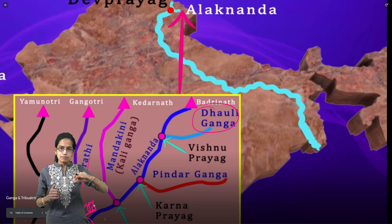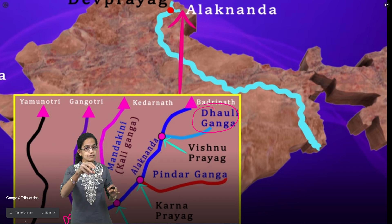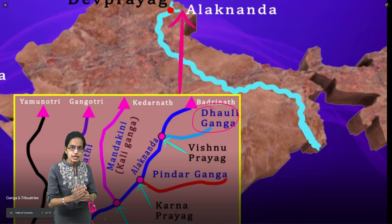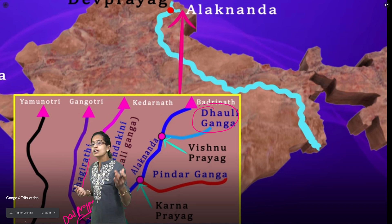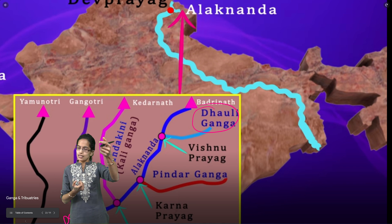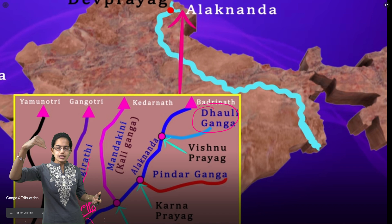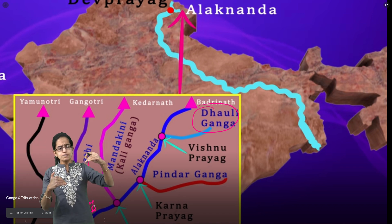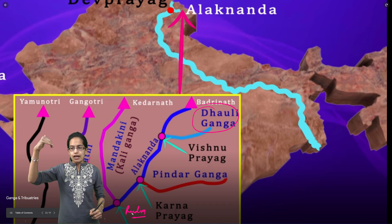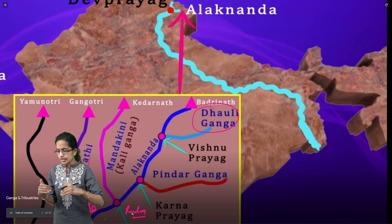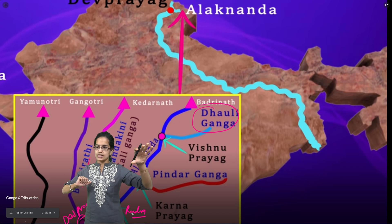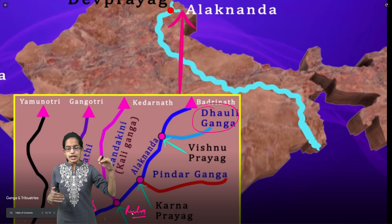When Alaknanda originates from Badrinath Glacier, it joins with Dholi Ganga at Vishnu Prayag. Following that, Alaknanda joins with Pindar Ganga at Karna Prayag. Further moving down, it joins with Kali Ganga or Mandakini, which originates from Kedarnath Glacier, at Rudra Prayag. Then the Bhagirathi River joins Alaknanda at Devaprayag. Bhagirathi originates from Gangotri, and Alaknanda from Badrinath. Yamuna from Yamunotri joins the Ganga further downstream.